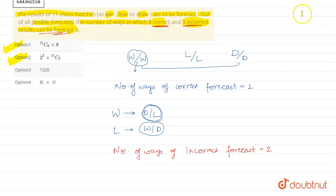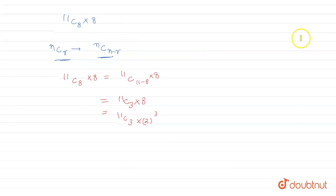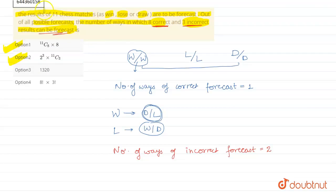Now calculating its value, we have 11C3 into 8. So 11C3 can be written as 11 times 10 times 9 upon 3 times 2 times 1, into 8, which is nothing but 1320. Let's see if there is an option like this. Yes, third option is correct.